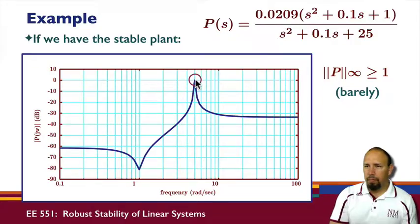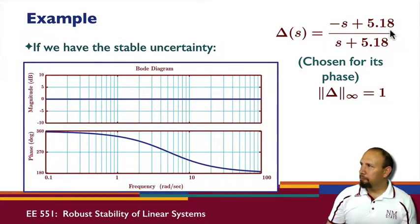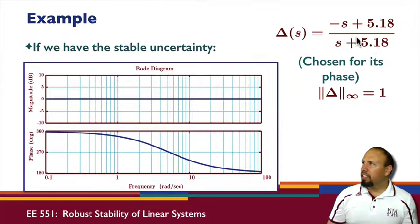We now consider this uncertainty. This uncertainty has magnitude equal to one for all frequency. This is what's called an all-pass function. It's very common to use all-pass functions for these types of things because this is a transfer function, and yet it has magnitude that is known.